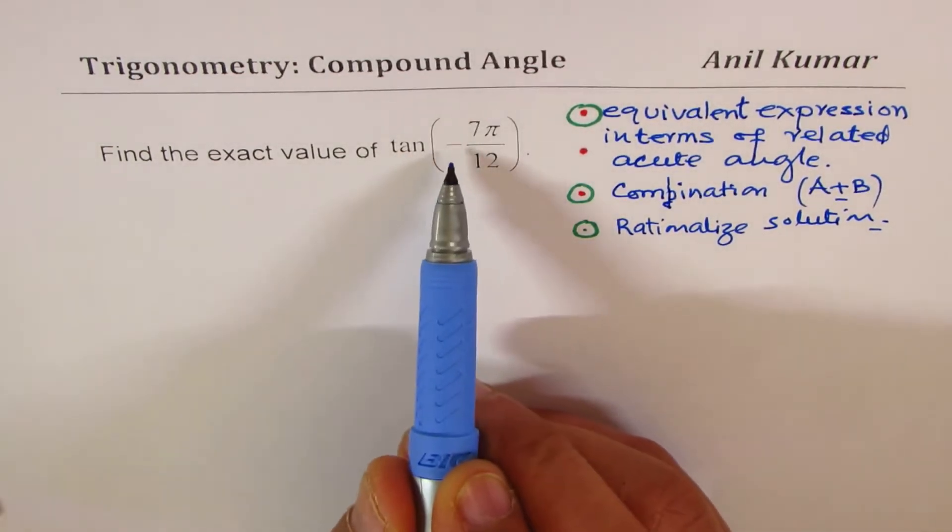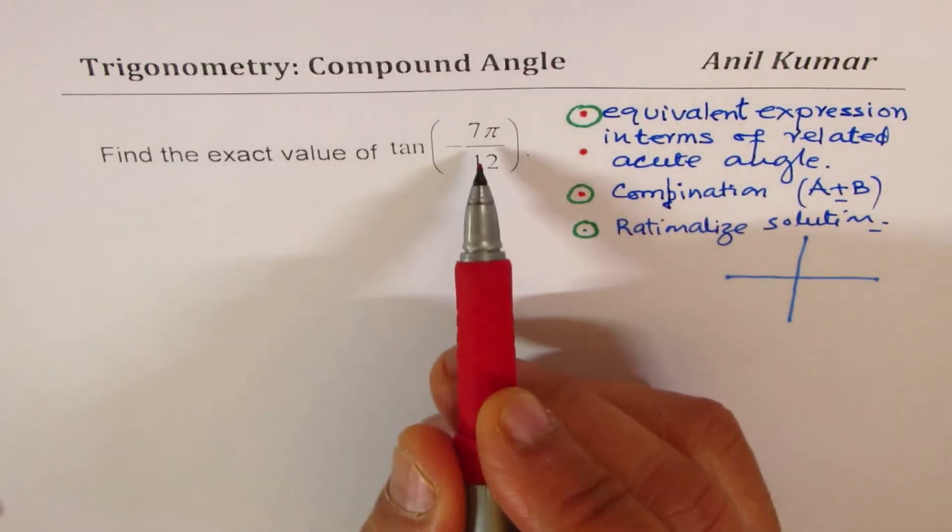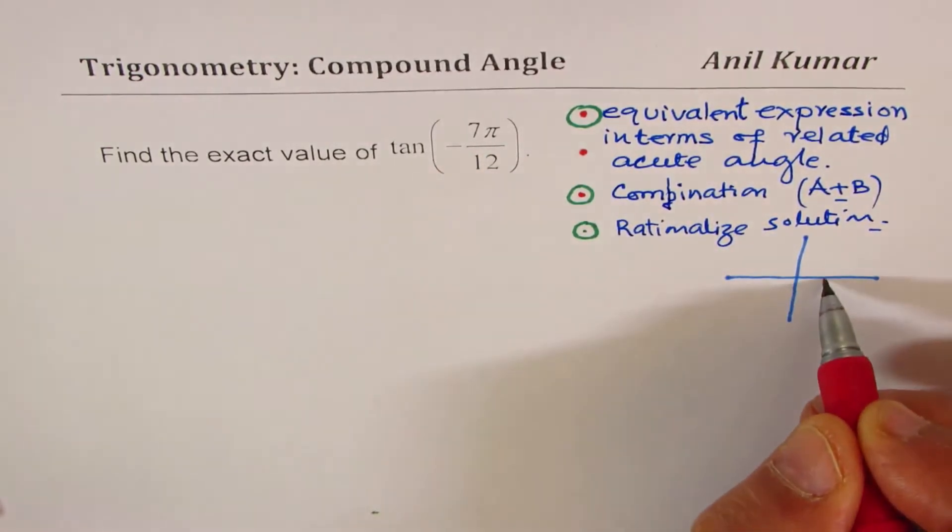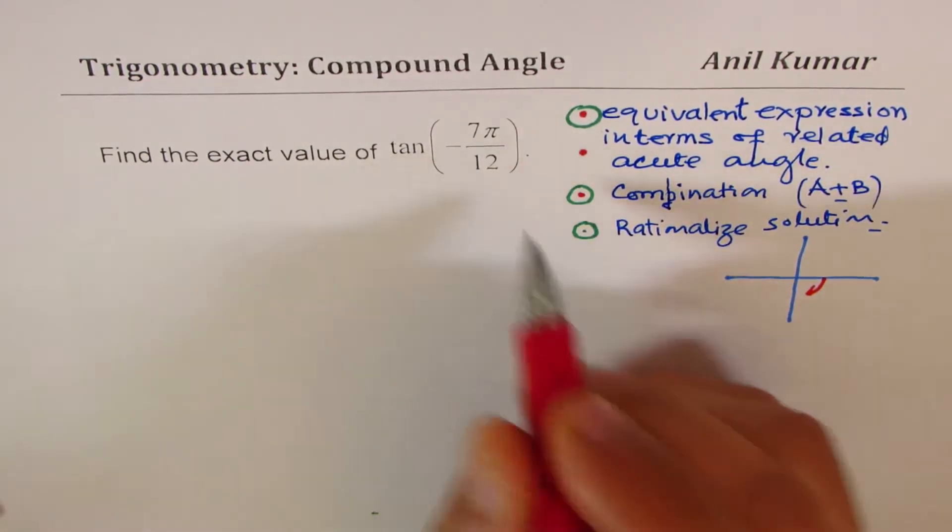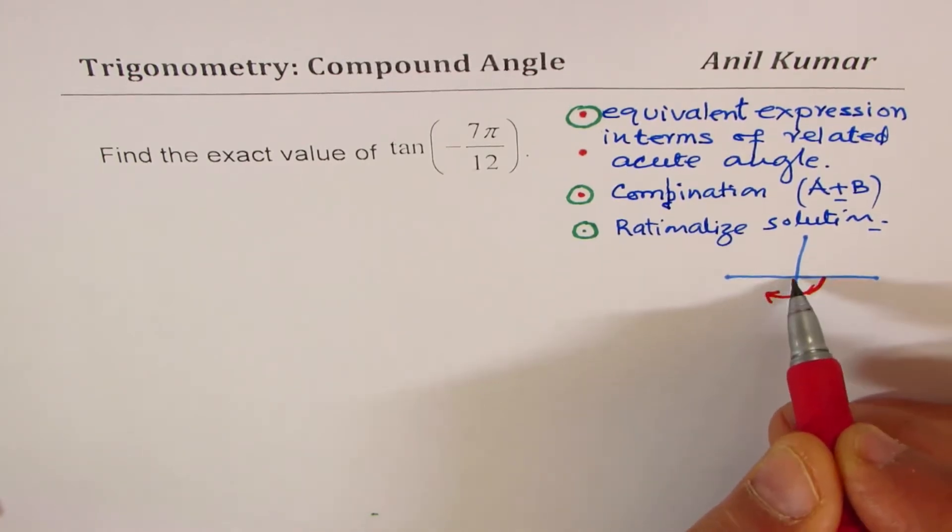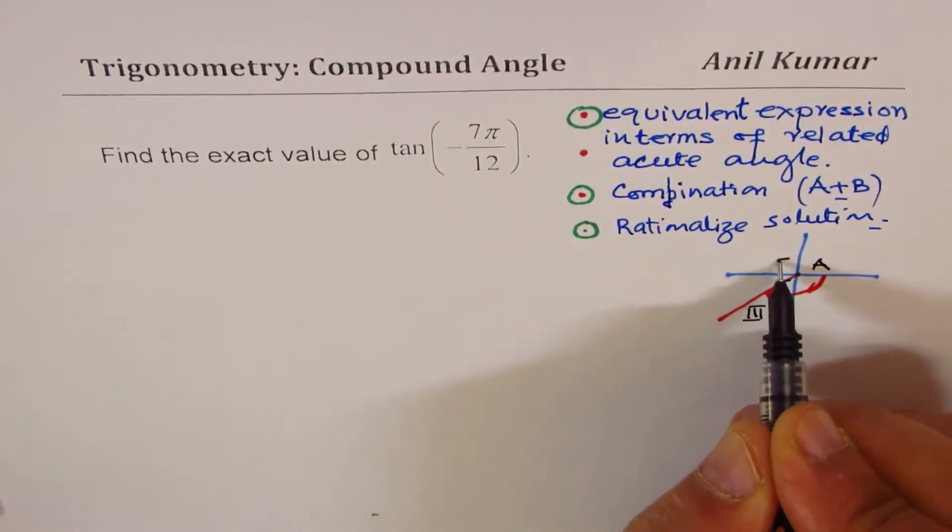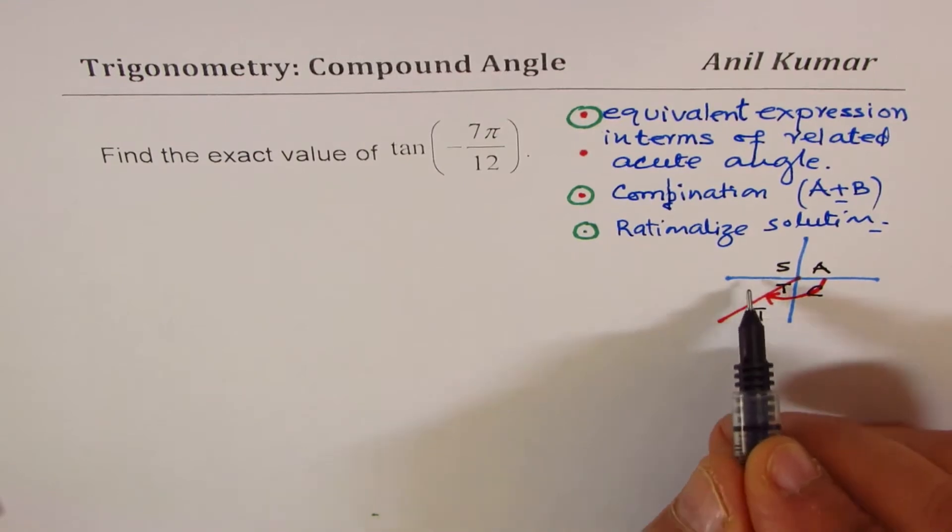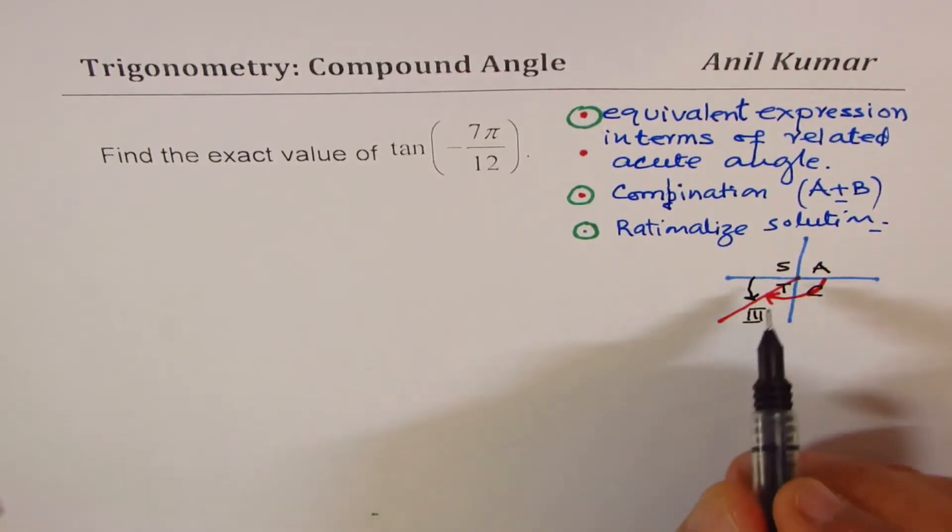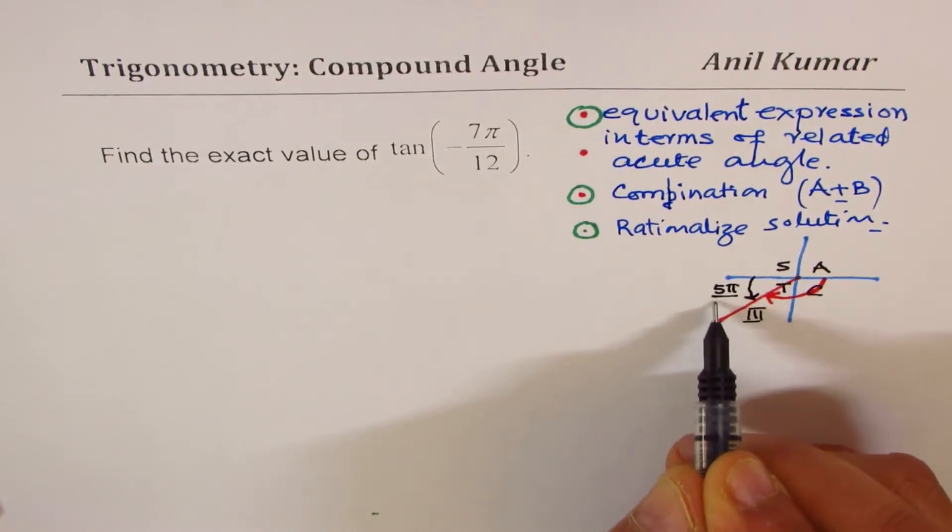So let's begin. When I say tan(-7π/12), minus means we are moving in the direction which is clockwise. 7π/12 means we already divided this π into 12 portions. 7 is more than half, so we are somewhere here. This happens to be quadrant 3 where tan is positive.